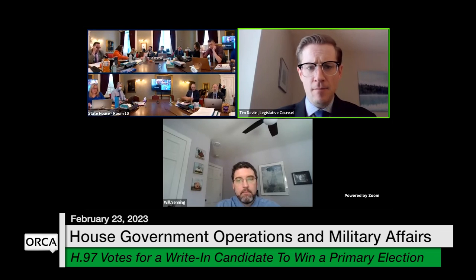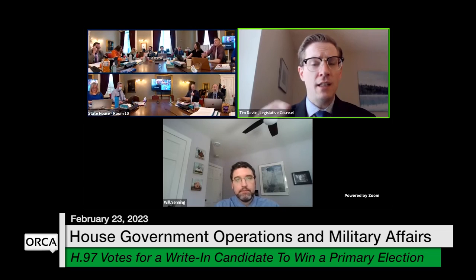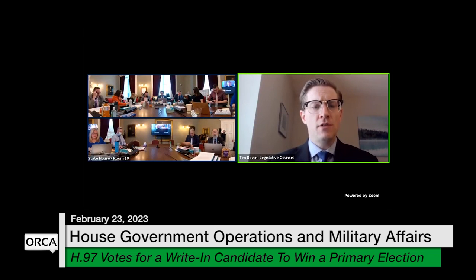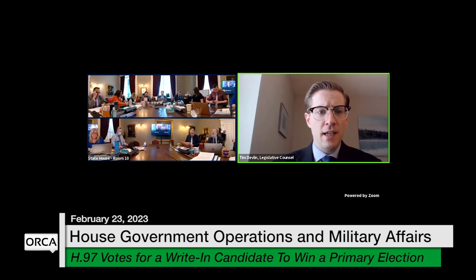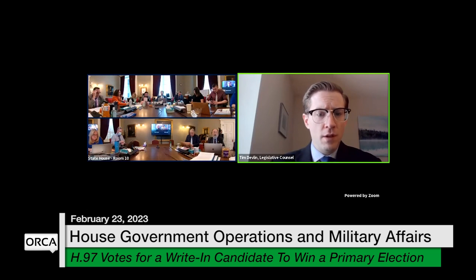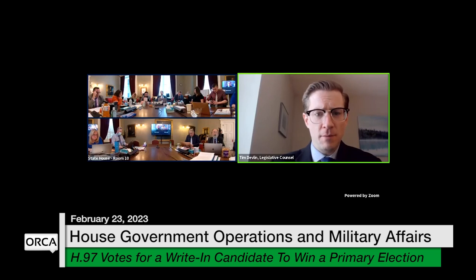The additional language appears highlighted on page 8 under subsection B. Subdivision one reads: a write-in candidate shall not qualify as a primary winner unless the candidate has complied with subsection A and receives the higher of 10% of votes cast by the party plus one additional vote, or the same number of votes as signatures required for the candidate's office on a primary petition. Subdivision two: if no candidate is determined to be the candidate of the party pursuant to subdivision one, the candidate may be nominated by a party committee in accordance with sub-chapter two of this chapter.